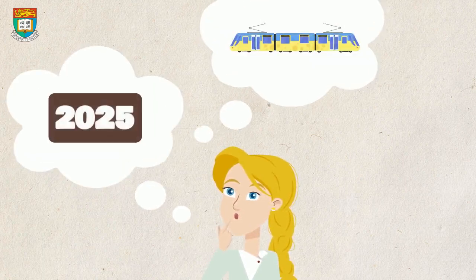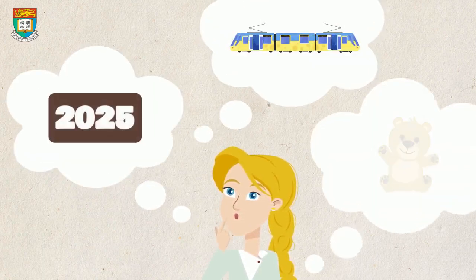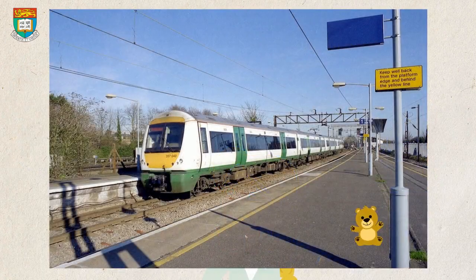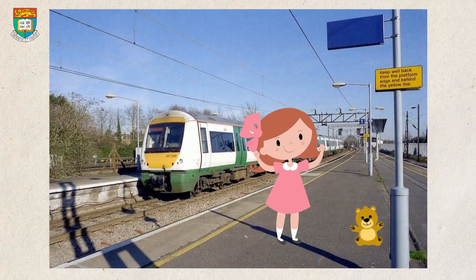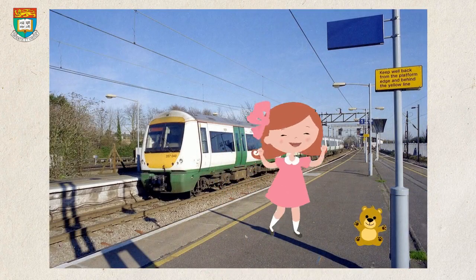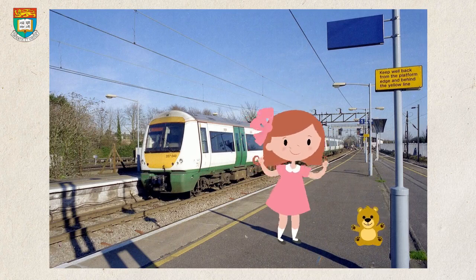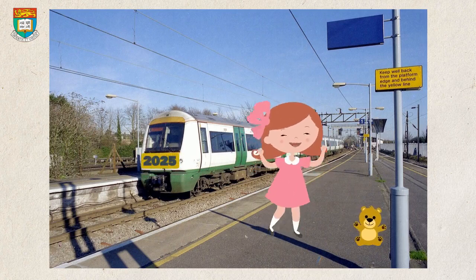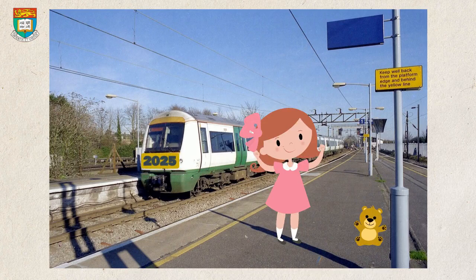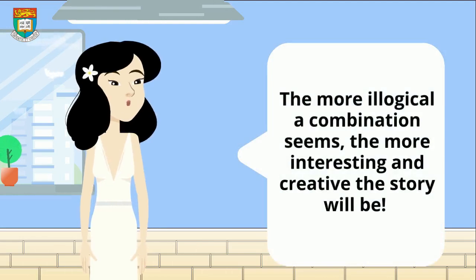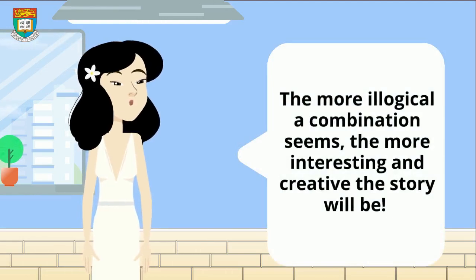What does this toy bear look like? Can the toy bear talk? Stretch your mind and try to develop the connection between these irrelevant images. For example, one student wrote about a little girl who found a teddy bear left alone in a train station — she then got on a train numbered 2025 and traveled to a parallel world. The more illogical a combination seems, the more interesting and creative the story will be.